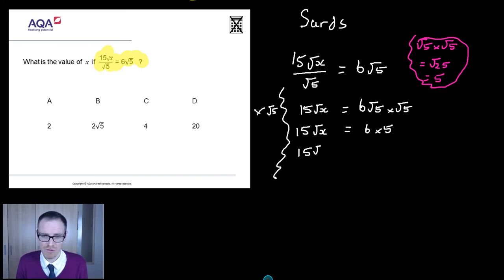So, 6 lots of √5 times √5 is just going to be equal to 6 lots of 5, because √5 times √5 is just 5. Be careful with that one. So, we end up with 15√x is just going to be equal to 30. And now things aren't looking too bad, right? But let's not mess up. Let's get rid of this times by 15 by dividing by 15. So, I get the square root of x equals 30 divided by 15, which I think is 2.